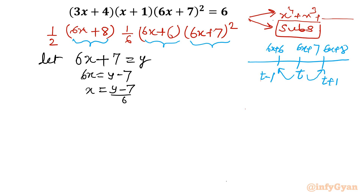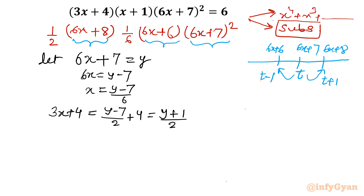Now let us find the bracket values in terms of y. For the first bracket, 3x + 4: substituting gives (y − 7)/2 + 4 = (y + 1)/2. For the second bracket, x + 1: substituting gives (y − 1)/6.